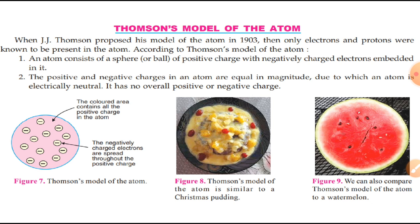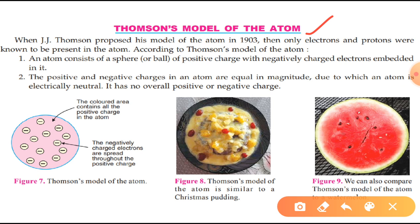Now we are going to study the structure of an atom, and we will start with Thomson's model of an atom. When J.J. Thomson proposed his model of an atom in 1903, only electrons and proton were known to be present in the atom.